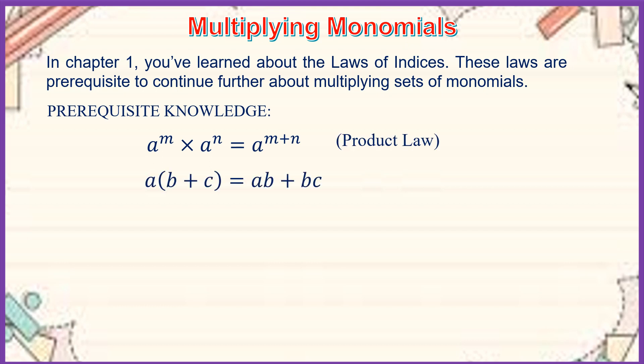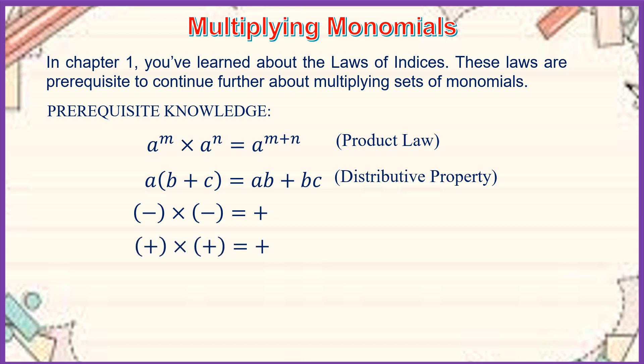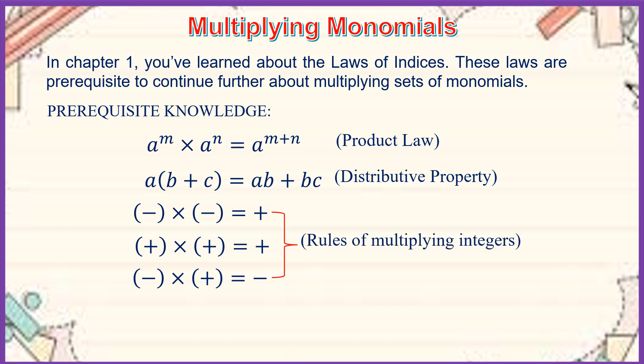And if we have a times the quantity b plus c, it is equal to ab plus ac — this is the distributive property. And we have: negative times negative equals positive, positive times positive equals positive, and negative times positive or positive times negative equals negative. These are the rules of multiplying integers.